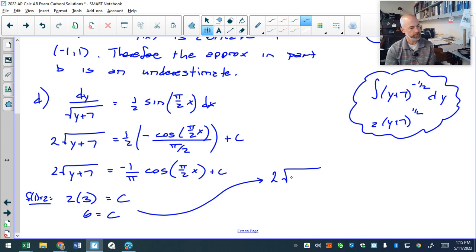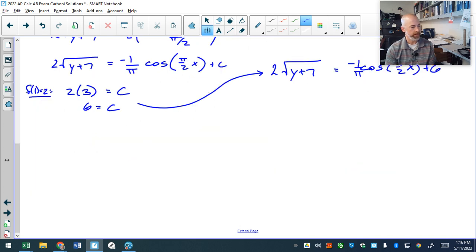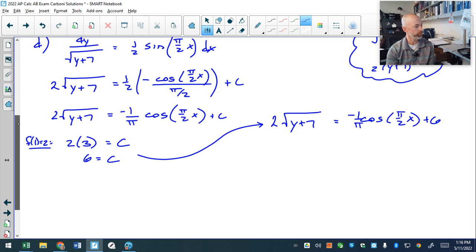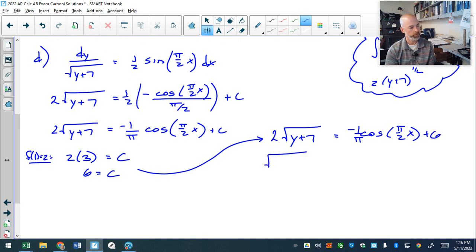and then we have a bunch of algebra to finish solving for y. 1 over pi, cosine of pi over 2x plus 6, divide by 2. So the square root of y plus 7 will equal negative 1 over 2 pi, no not negative 1 over 2 pi, I don't know where the square root came from. Cosine of pi over 2x, 6 divided by 2 is 3.